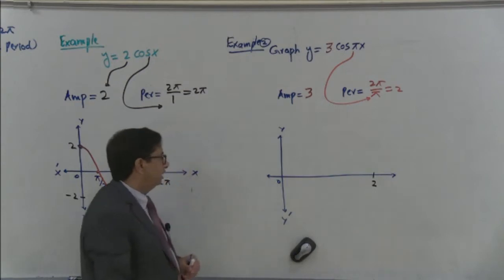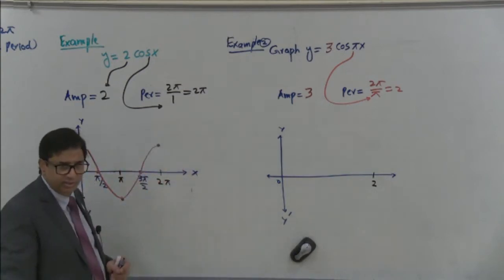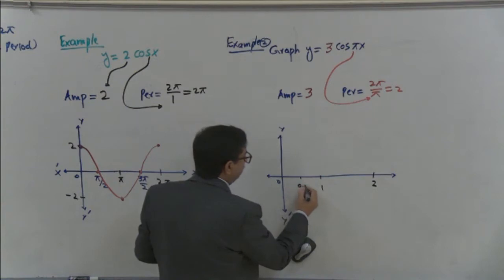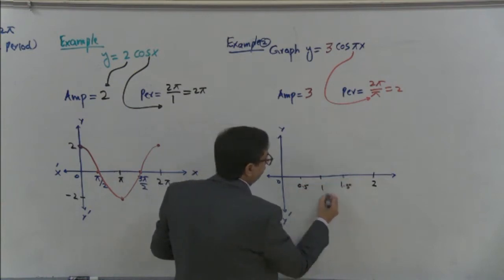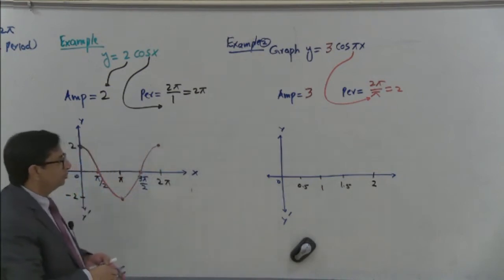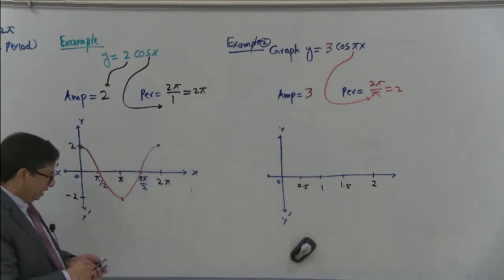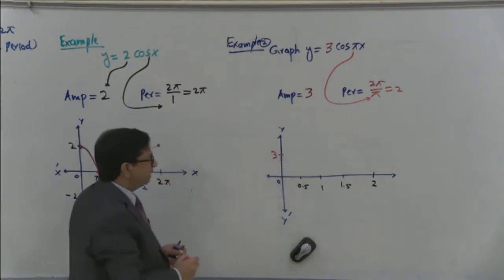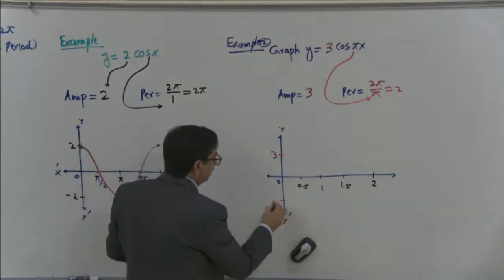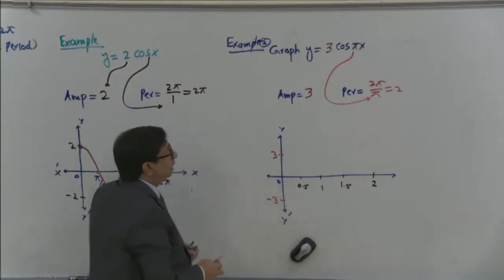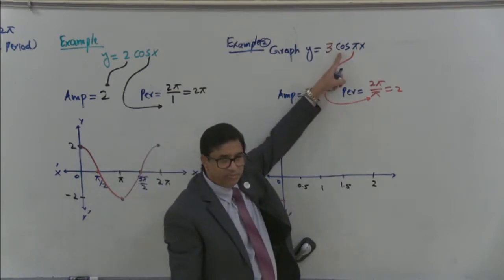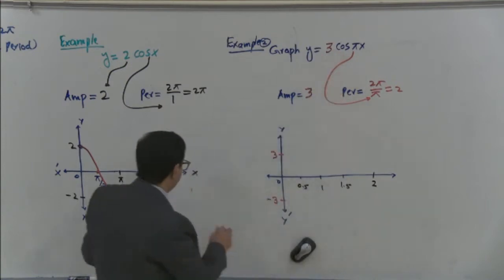Mark it. And divide this length 0 to 2π in 4 equal intervals. First one is midpoint. Which is 1. And this is half 0.5. And half 1.5. So we divide 0 to 2 in 4 equal intervals. And amplitude is 3. In case amplitude 3. So we write 3 and negative 3. Look at this one. The shape of the graph. It depends upon this curve. Cosine. And cosine curve is like this.